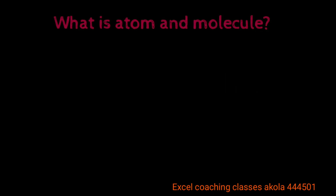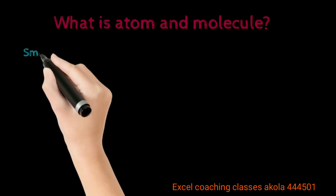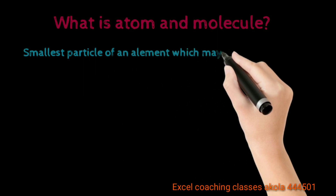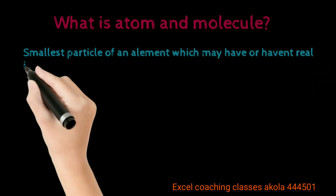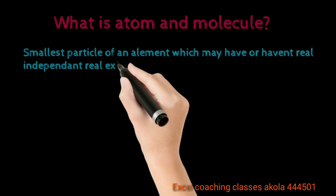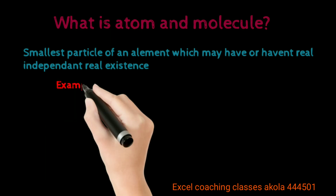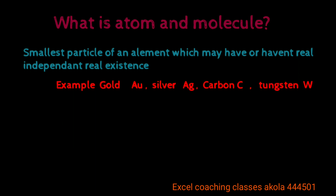First question: what is an atom and molecule? An atom is the smallest particle of an element which may or may not have an independent real existence. This is the smallest particle of an element called an atom. For example, gold — if you take a very minute quantity — what is that? An indivisible particle. Silver, carbon, and tungsten are all examples of atoms.